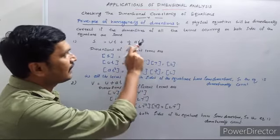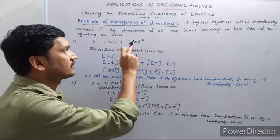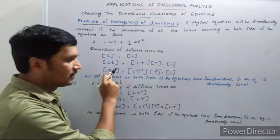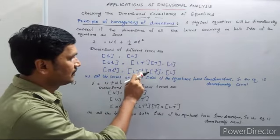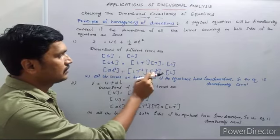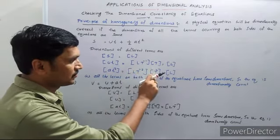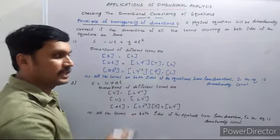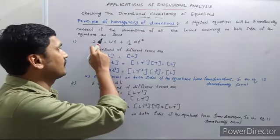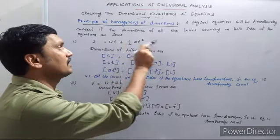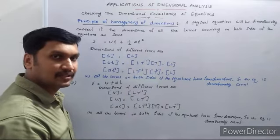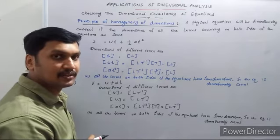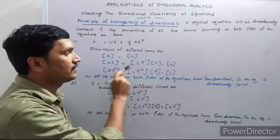The second term is ½at². Half is a number with no dimension, so we consider a·t². A is acceleration with dimension L·T⁻², and t² has dimension T². So L·T⁻² into T² gives dimension L. Both terms on the right-hand side have dimension L, same as the left-hand side. So this equation is dimensionally correct — we have checked the dimensional consistency of this equation.